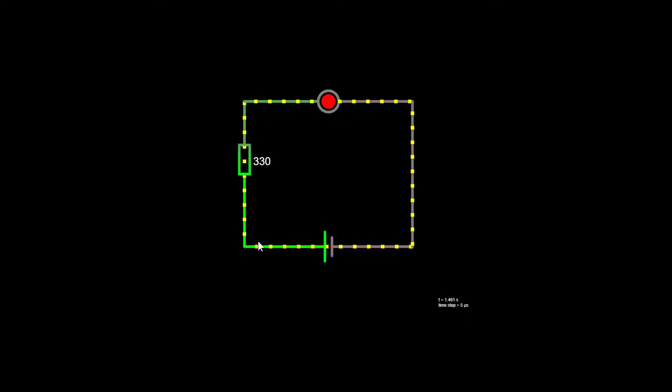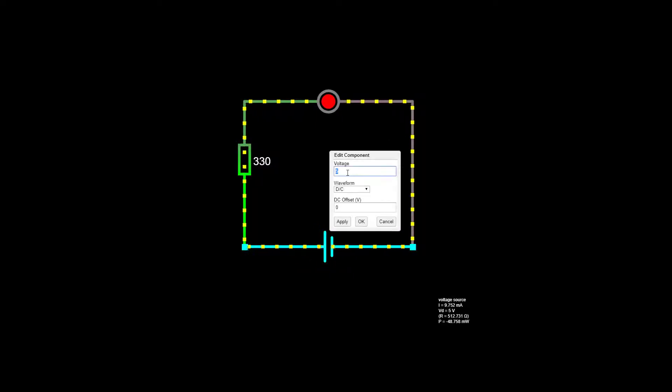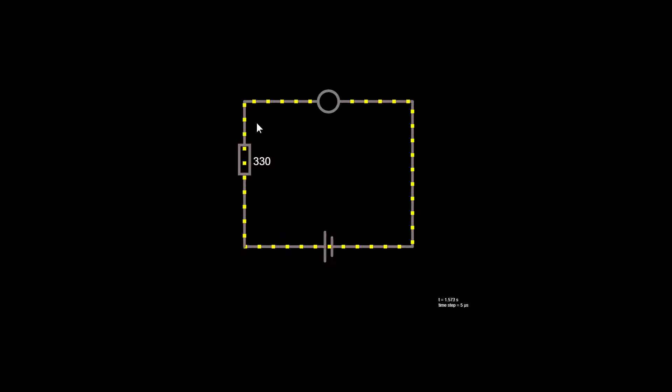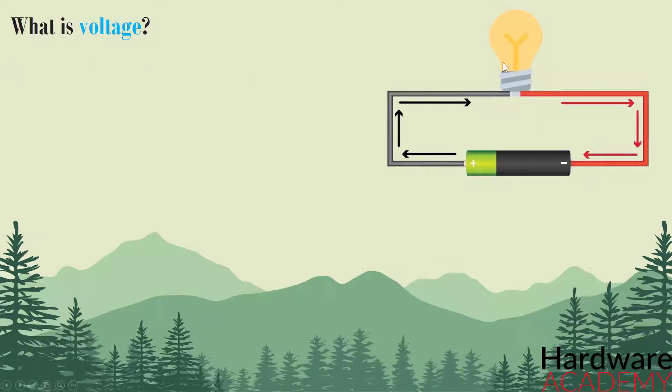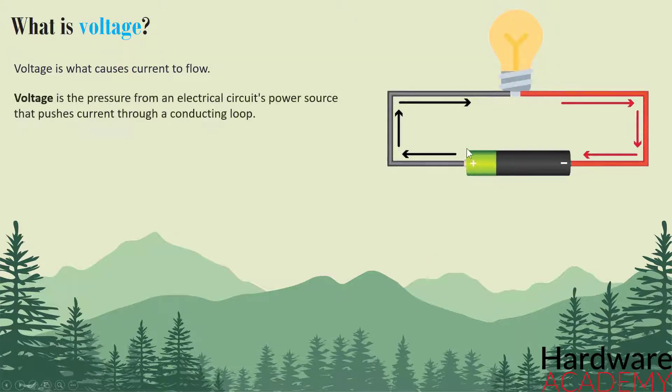As you can see, the yellow tiny squares are moving from the positive side of the battery to the negative side. This is what we call the flow of current. If the voltage of the battery is let's say 0 volts, there will be no current flowing in the circuit anymore. So we can say that voltage is like a pressure that is provided by the battery that pushes current through a conductive loop enabling to do work such as illuminating a light.